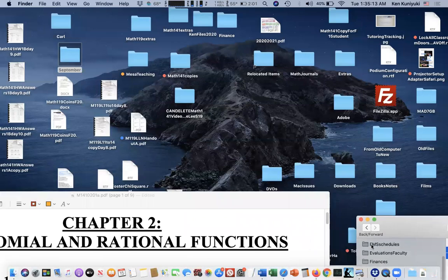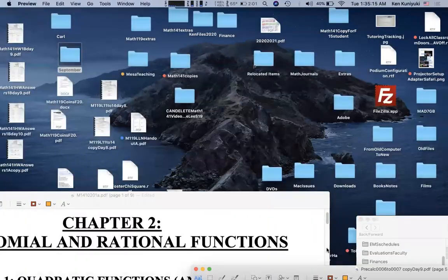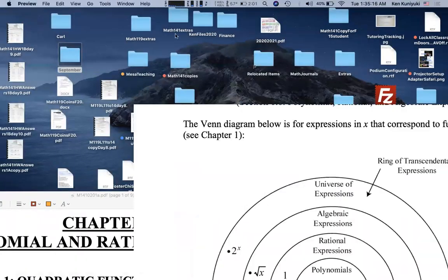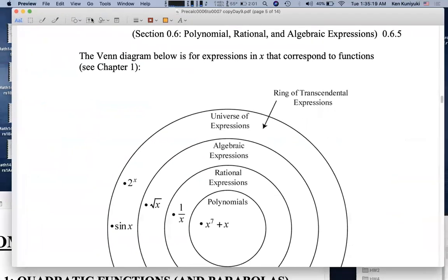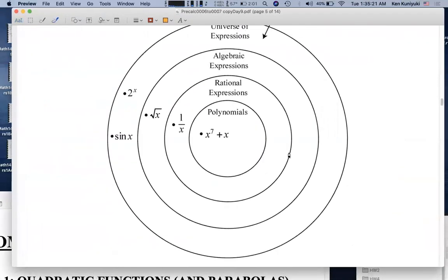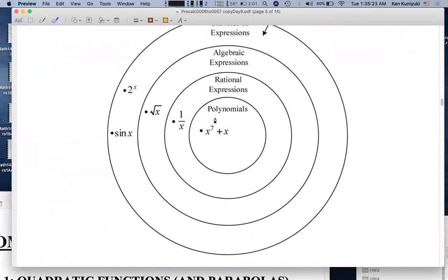Back in section 0.6, we had this Venn diagram for function expressions. So, at the center, we have these polynomial function rules, and we're going to focus mostly on these for much of Chapter 2.